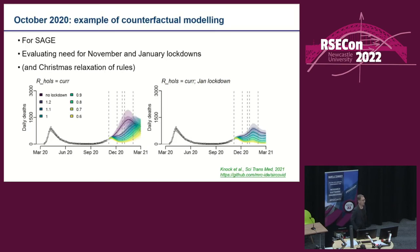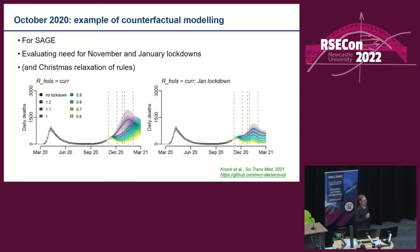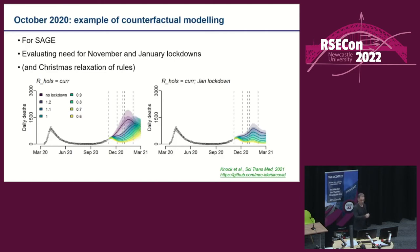An example of the policy work we did: this is work done in October 2020 for SAGE looking at the potential impact of a second one-month circuit breaker lockdown with schools being open. Because schools were going to be open, we couldn't precisely predict the effect, so different colours represent different scenarios for effectiveness. We also modelled the potential additional impact of a January 2021 lockdown. From the height of those curves, we were anticipating under any circumstances we'd most likely need a third lockdown in January 2021. Reality differed — we didn't realise at that time that the alpha variant was starting to spread in the UK, making the situation even worse.